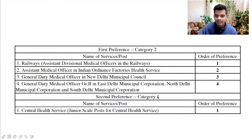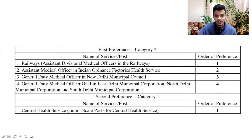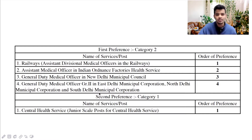So category one is Central Health Services post, and category two under it comes the railways, ordinance factories, and GDMO in New Delhi Municipal Corporation and GDMO in East, North and South Delhi Municipal Corporation.